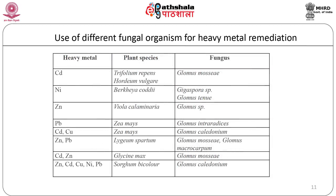This table shows the plant species and fungal spores which are used in the bioremediation process of heavy metals. Heavy metals like cadmium, nickel, zinc, lead, and copper can be bioremediated with the help of these plant species and fungi.